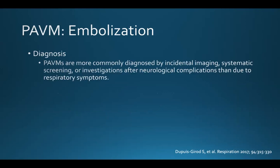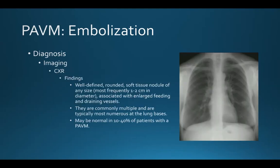Symptomatic pulmonary AVMs are actually less common than asymptomatic ones. As a result, these are more commonly diagnosed by incidental imaging, systematic screening, or investigations after neurological complications than due to a workup of respiratory symptoms. On chest X-ray, these will be well-defined, rounded soft tissue nodules, probably needing to be greater than one centimeter to be reliably seen, and can be associated with enlarged feeding and draining vessels. Ten to 40% of patients with a PAVM will have a normal chest X-ray.